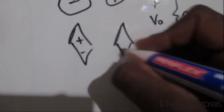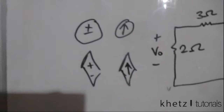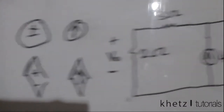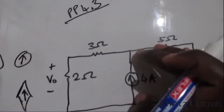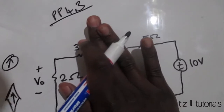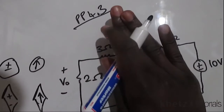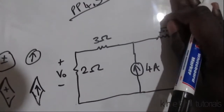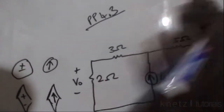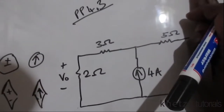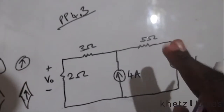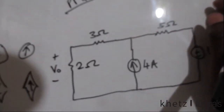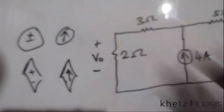What the superposition theorem is saying is that if you take out one independent source and find the value of Vo when you only have the other, then take out that voltage source and find the value of Vo when you only have the other, and combine those two contributions — that is your total value of Vo.